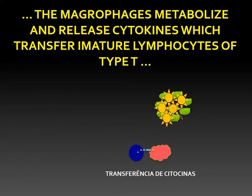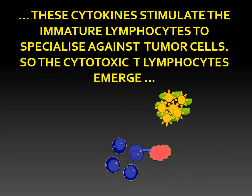The macrophages metabolize and release cytokines which transfer immune lymphocytes of type T. These cytokines stimulate the immature lymphocytes to specialize against tumor cells, so the cytotoxic T lymphocytes emerge.